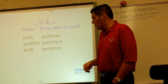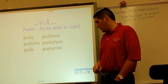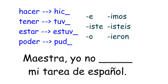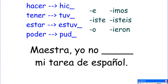Él no pudo ir — he couldn't go. Yo no pude hacer la tarea — I wasn't able to do the homework. Let's put them to practice. Here we've got our verbs on the left, conjugations on the right, and a sample sentence below. We need to figure out which verb and what conjugation to use. Somebody says: Maestra, yo no... something mi tarea de español.